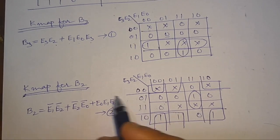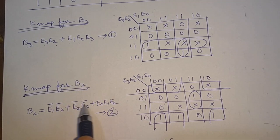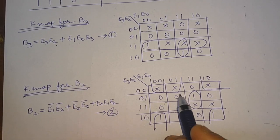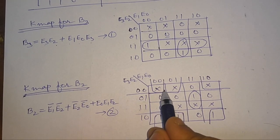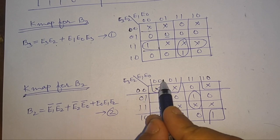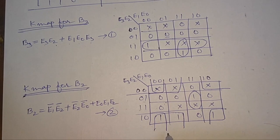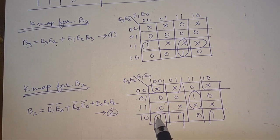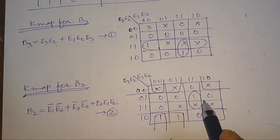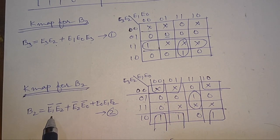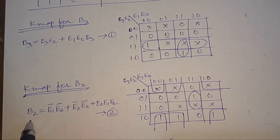This is the K-map for the BCD output B2. From here we can take groups — this one is the first term, this one is the second term, and this one is the third Boolean function. So we get three expressions, and this is the final expression for B2.